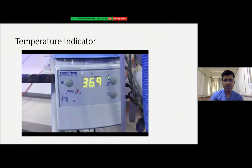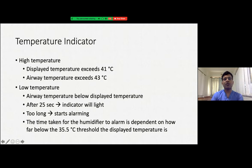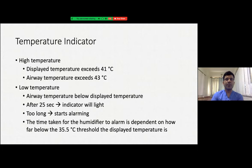Sometimes a temperature alarm occurs inside the airway due to very high or very low temperature. High temperature is usually indicated when it is more than 41 degrees and starts alarming when it is more than 43 degrees, which can be dangerously high and damaging to the patient. For low temperature, if it is below the set temperature for 25 seconds, the light starts blinking; if too long, it starts alarming. The time to alarm depends on the threshold — a 6-degree difference will trigger alarming earlier, while a 1 to 2 degree difference takes longer. Thank you.